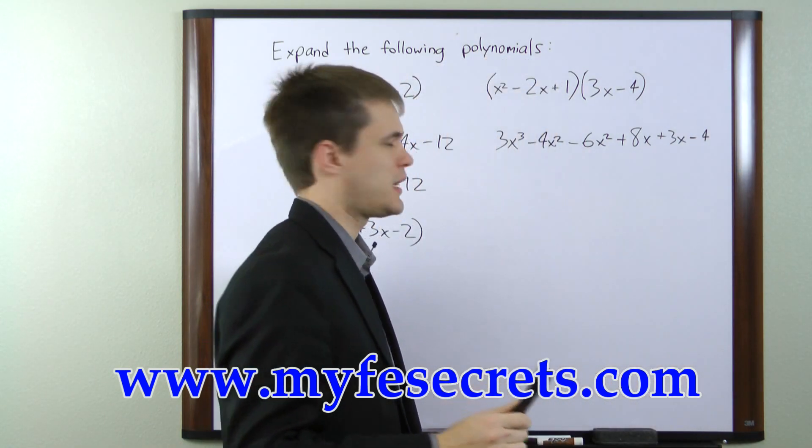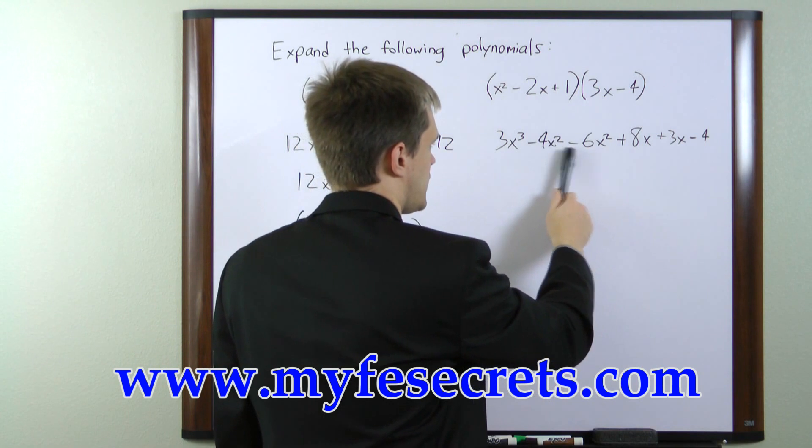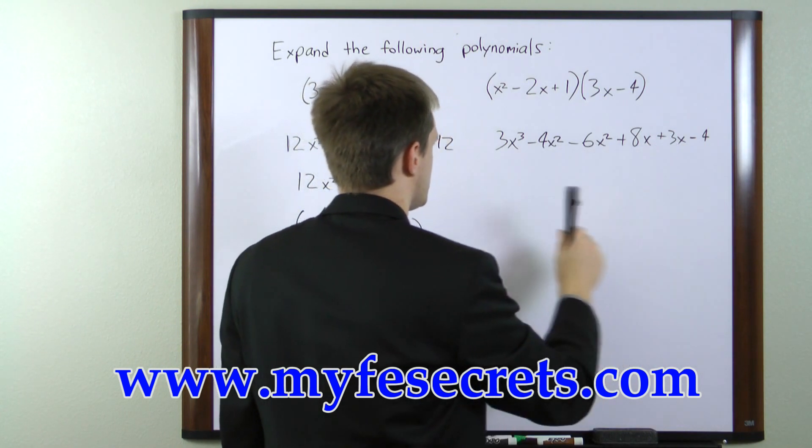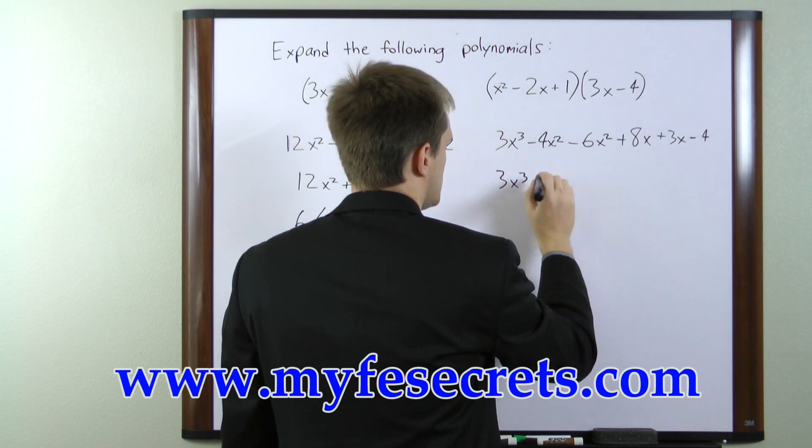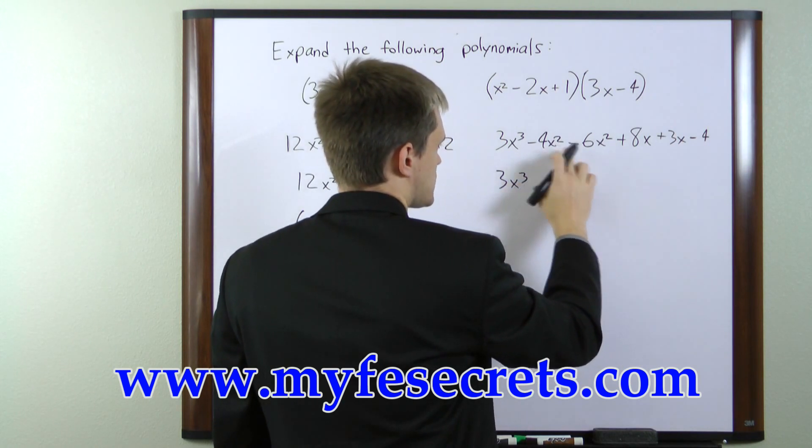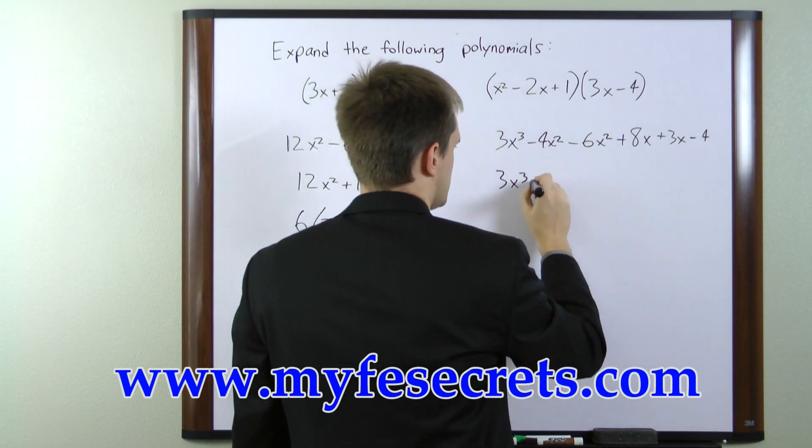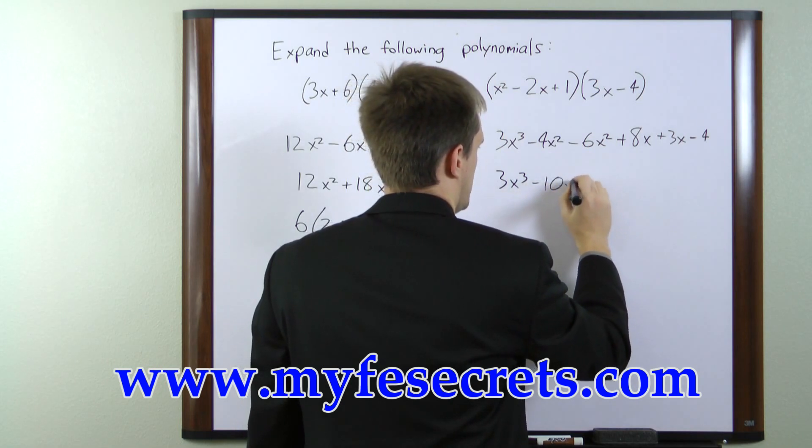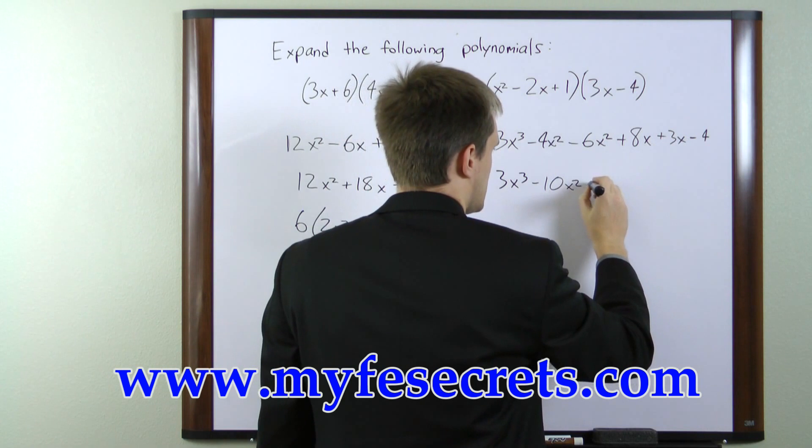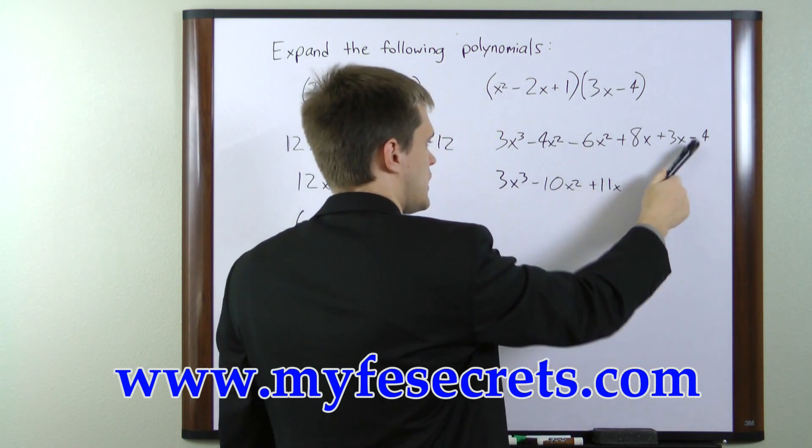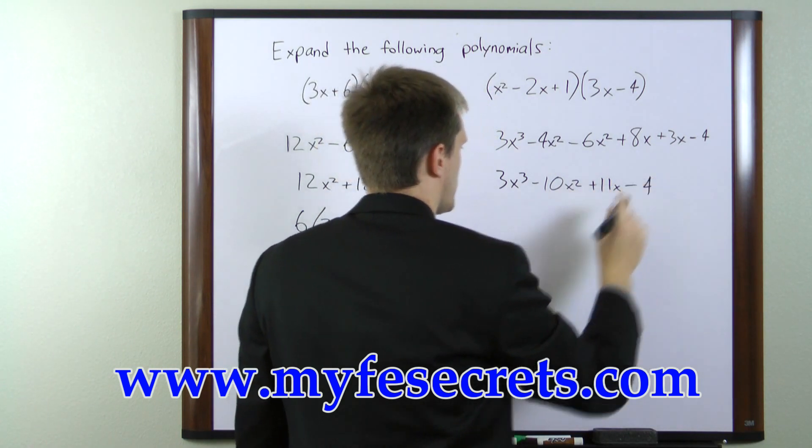Now once again, we need to combine like terms. We have a pair of x squareds and a pair of x's. So we'll go ahead and combine those. We have 3x cubed. Minus 4x squared minus 6x squared gives us a minus 10x squared. Plus 8x plus 3x gives us a plus 11x, and we still have a minus 4.